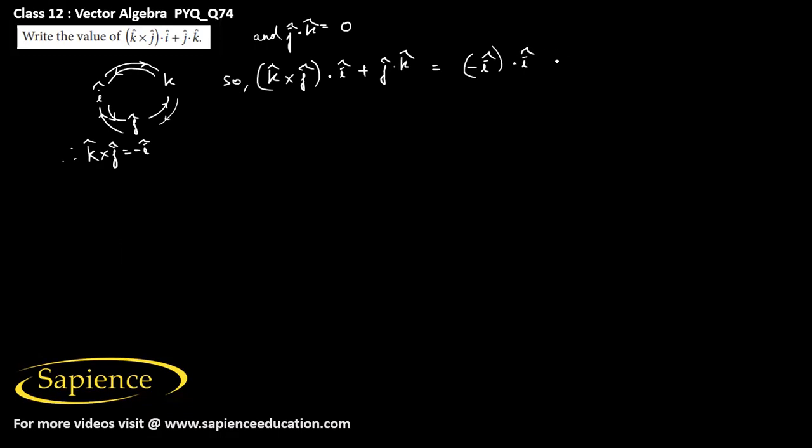Since j dot k equals zero, we have minus i cap dot i cap. i cap dot i cap equals one, so minus i cap dot i cap equals minus one. This is the final answer.